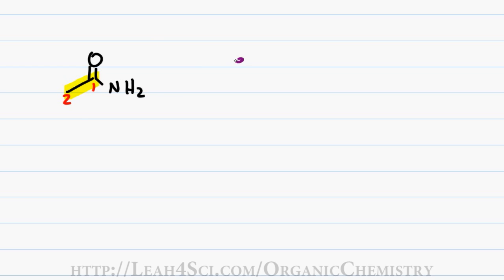I have two carbons in my parent chain for a first name of eth, only single bonds gives me a last name of an and the carbonyl bound to the NH2 gives me the suffix amide. I don't include the number because it's understood to be number one and since amide starts with the vowel, I drop the e in an for a final name of ethanamide.